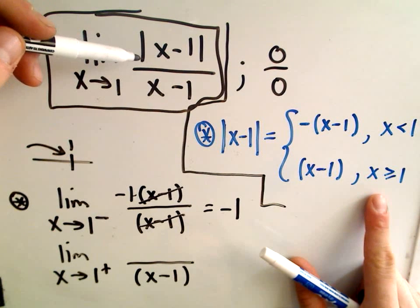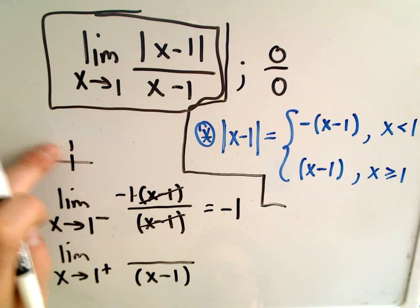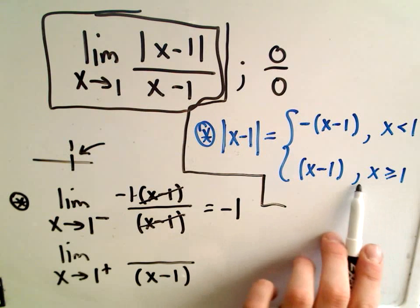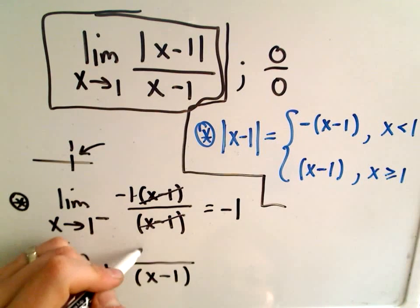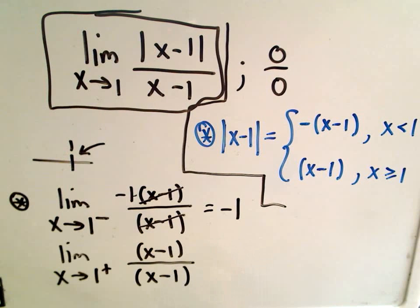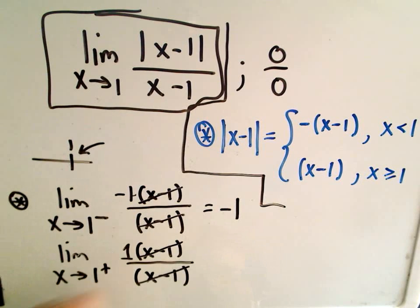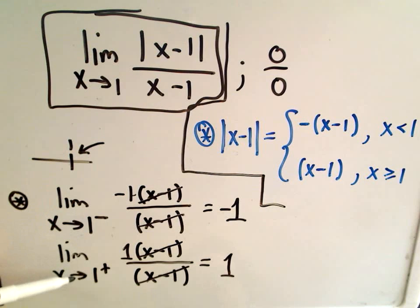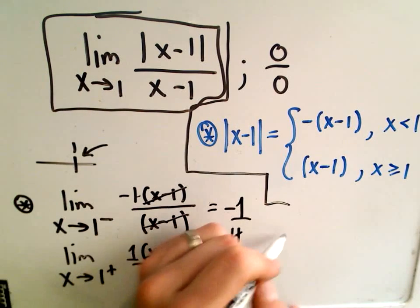Now approaching 1 from the right, x is larger than 1, so we can just remove the absolute value bars. The numerator becomes (x-1) over (x-1). We cancel the x minus 1s, leaving positive 1. So the right-hand limit equals +1. Since the left-hand limit, -1, does not equal the right-hand limit, +1, our conclusion is that this original limit does not exist.